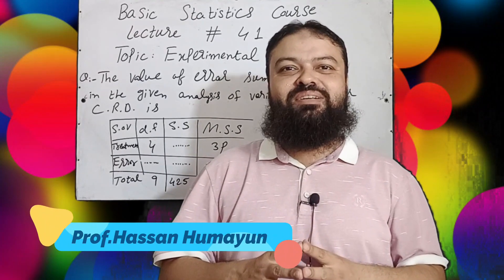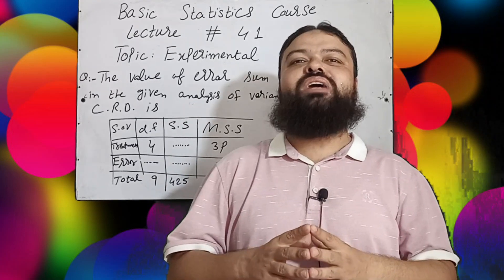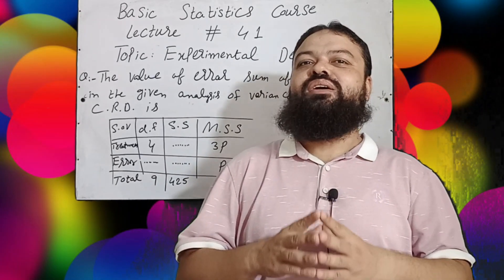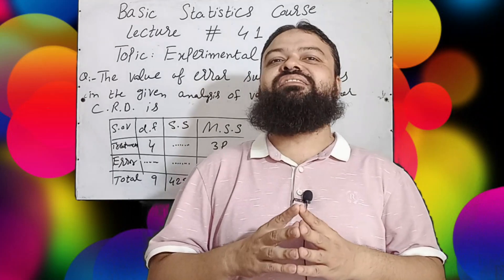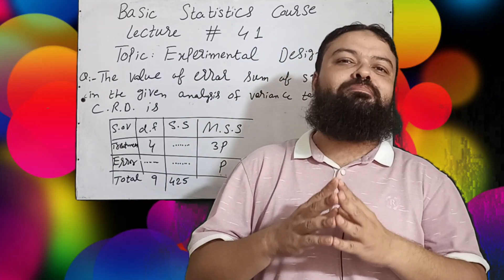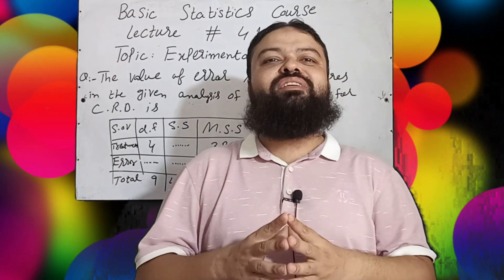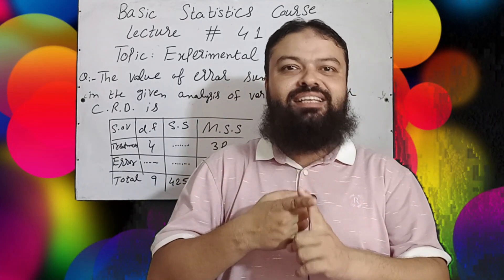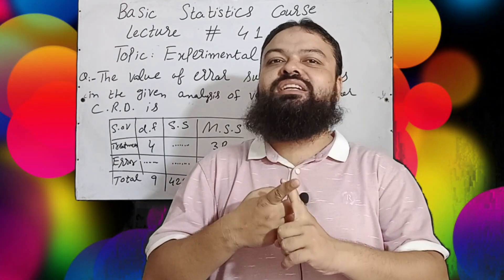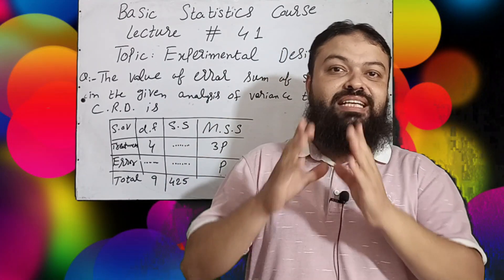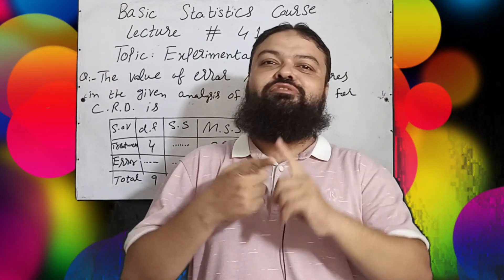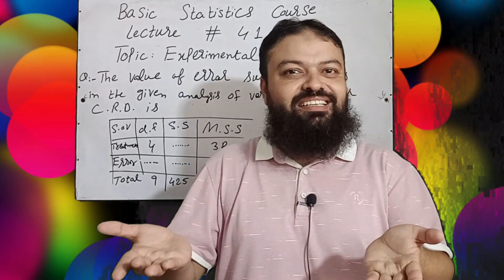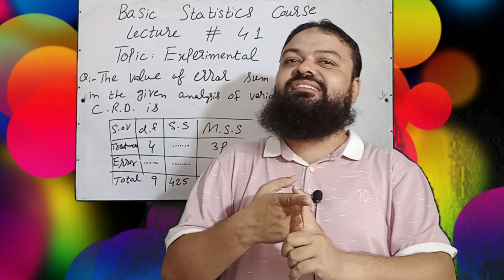Bismillahirrahmanirrahim. Assalamu alaikum. I am Professor Hassan and you are watching my channel, Professor Hassan Hamayun. This is lecture number 41 of the Basic Statistics course, and today is class three on the topic of Design of Experiment. In today's lecture we will discuss one important technical numerical multiple choice question for finding the error sum of squares when the ANOVA table of the CR design is given.